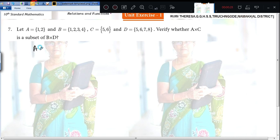A cross C whether it is a subset of B cross D. What are the elements given in A? 1, 2. This 1, 2 where is it? In B also it is there. So A is the subset of B.